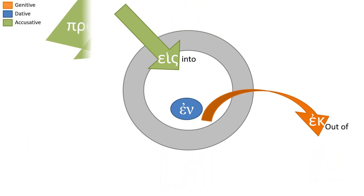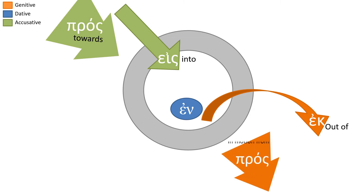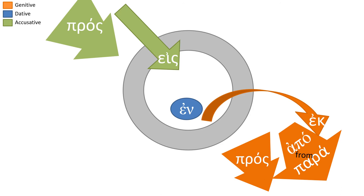Let's see if this pattern holds. Pros means 'towards' in the accusative. Pros means 'in a motion away from' in the genitive. Apo and para, in the genitive, also mean 'from.' We're holding to the pattern pretty well here.